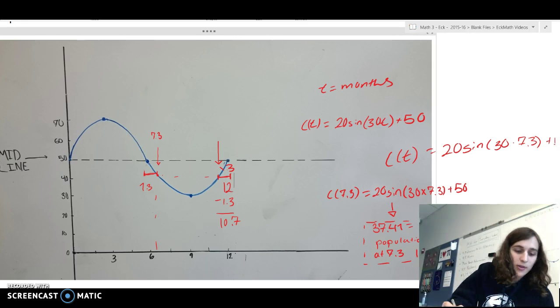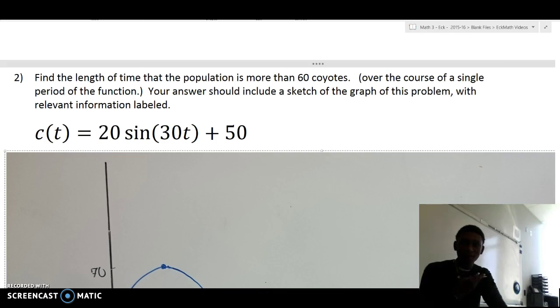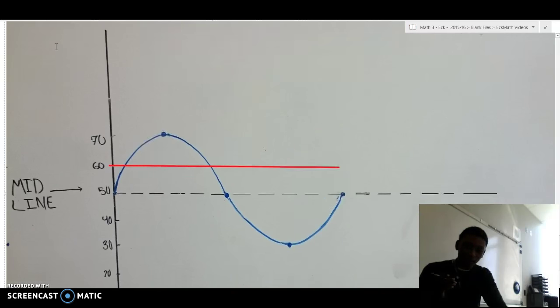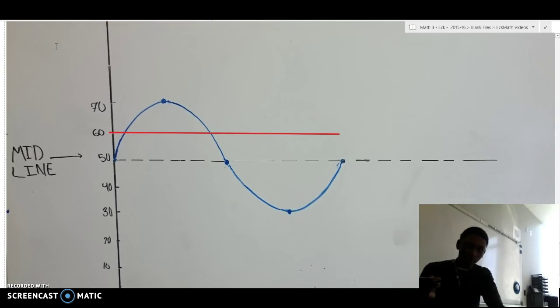The second problem says to find the length of time that the population is more than 60 coyotes. The problem also says it would like a sketch of the graph, which we already have. So, on the graph, you should probably make a line where 60 coyotes would be, and we've already done that here.